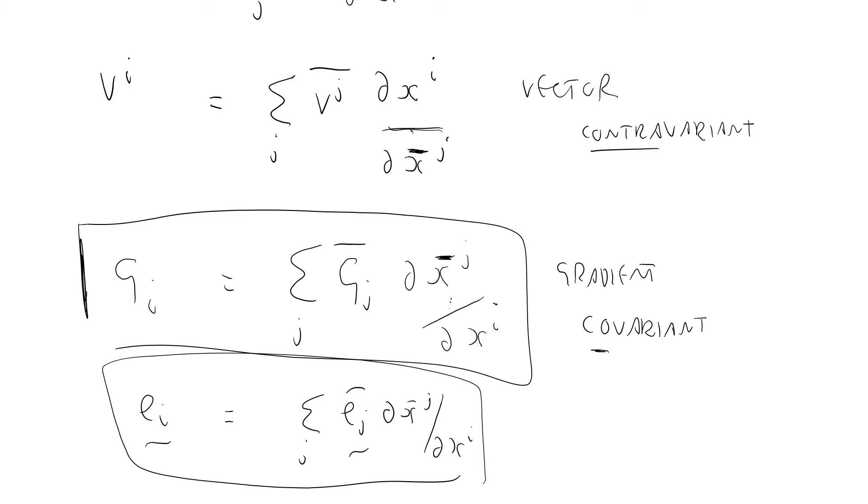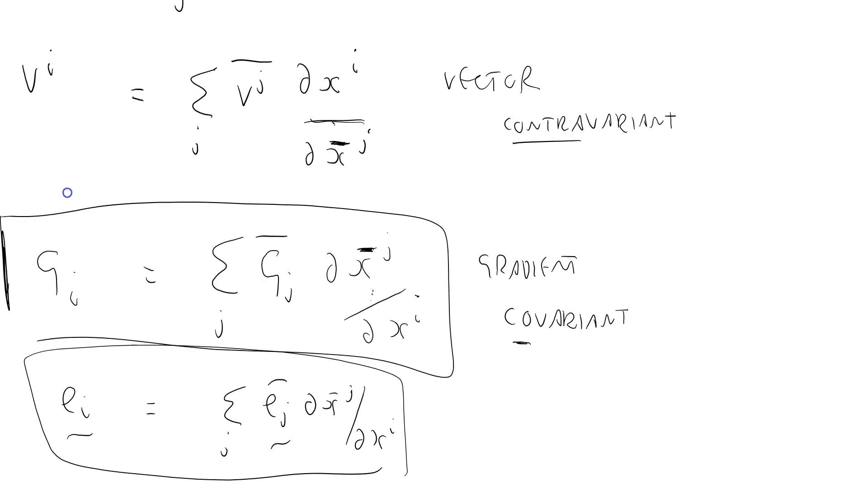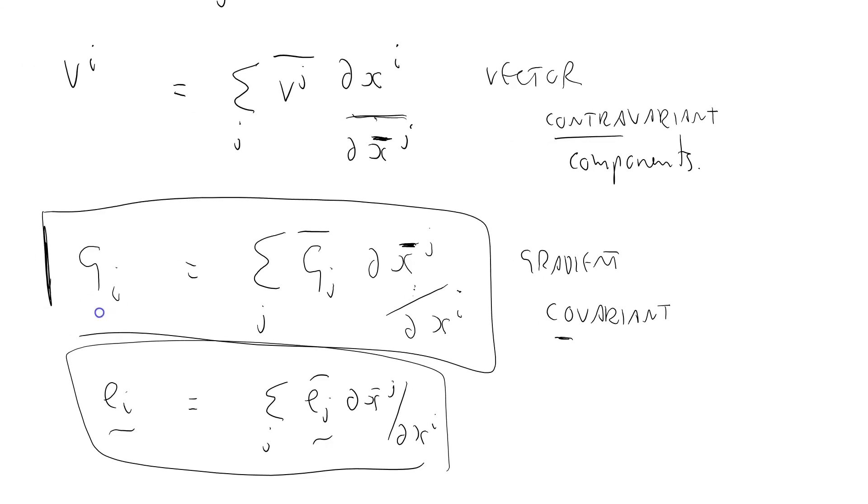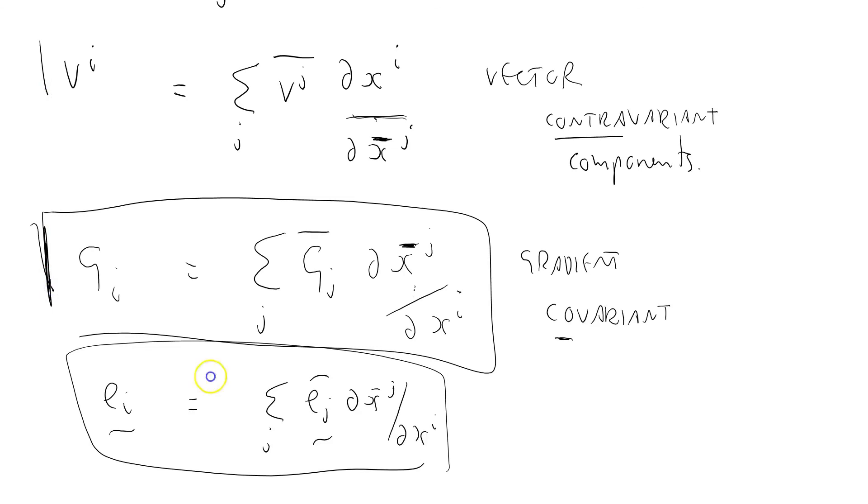Back in screencast one, or it might have been screencast two, I talked about the Jacobian of the forward, and the Jacobian of the backward transformation, and they were matrix inverses of one another. Here, it's not quite right, because we've got the transpose to worry about as well. So, I'm using language loosely. It's not quite a contravariant vector. It's contravariant components. There's different ways of expressing it. In whichever way you say it, somebody will say I've got it wrong.